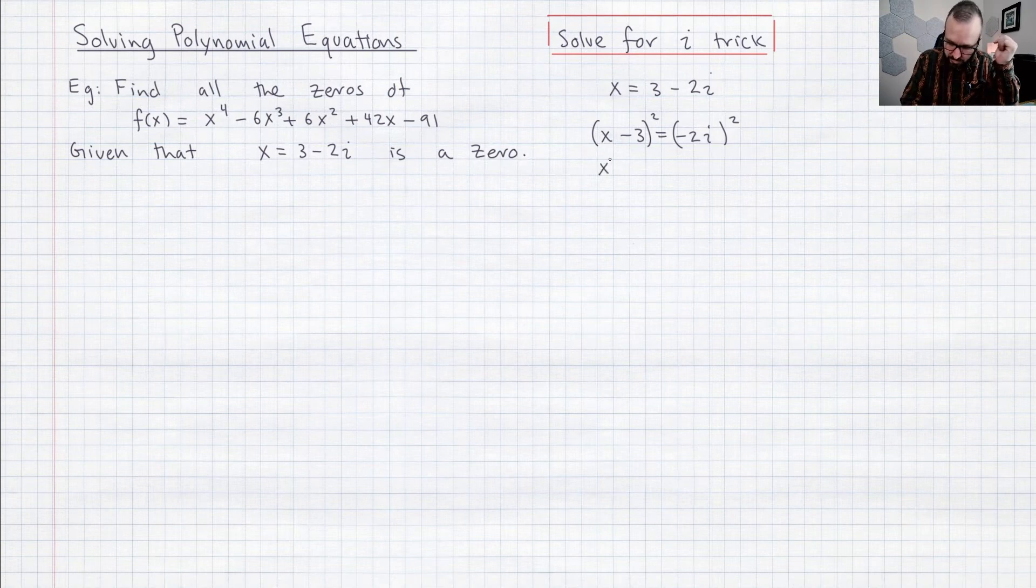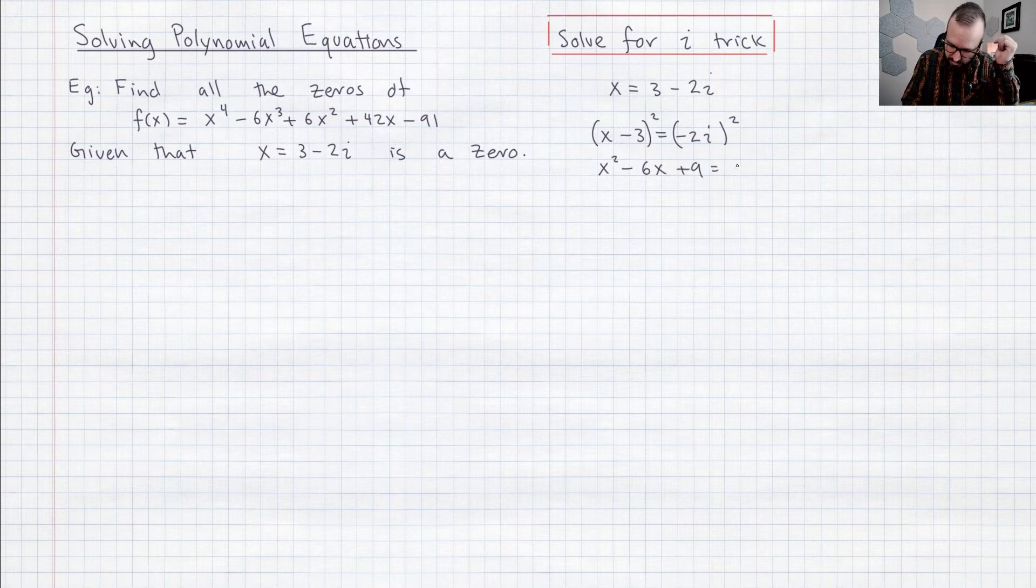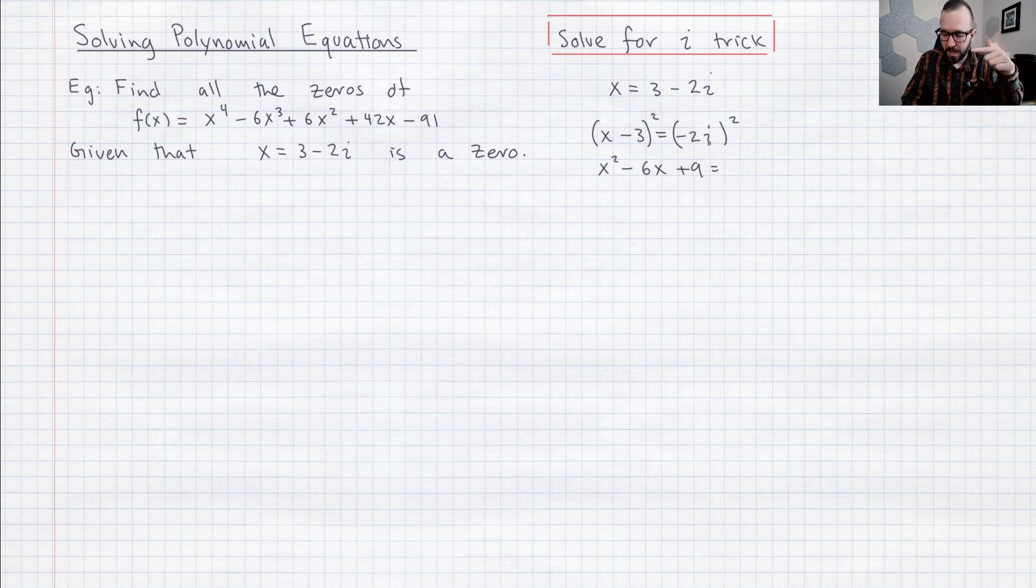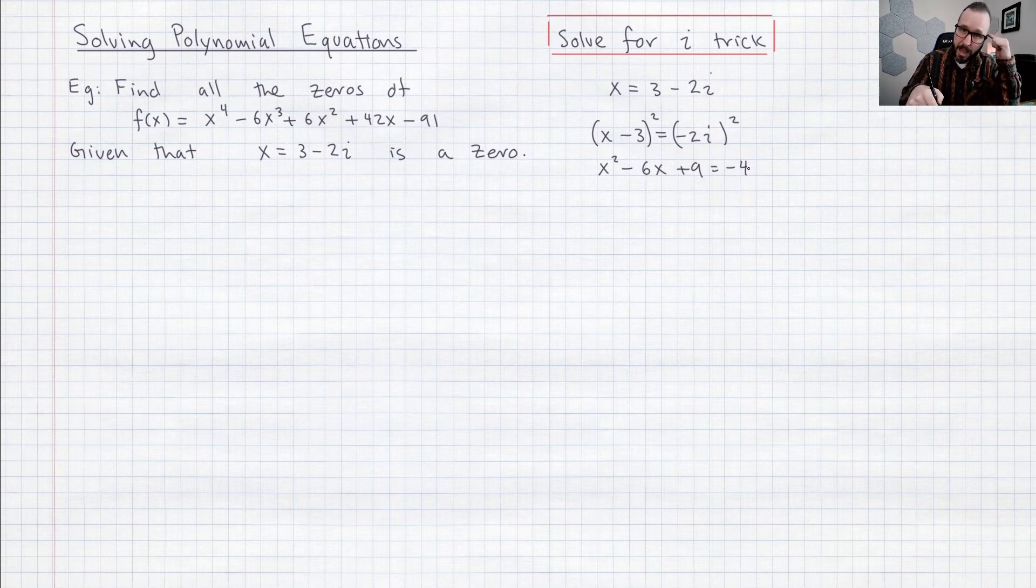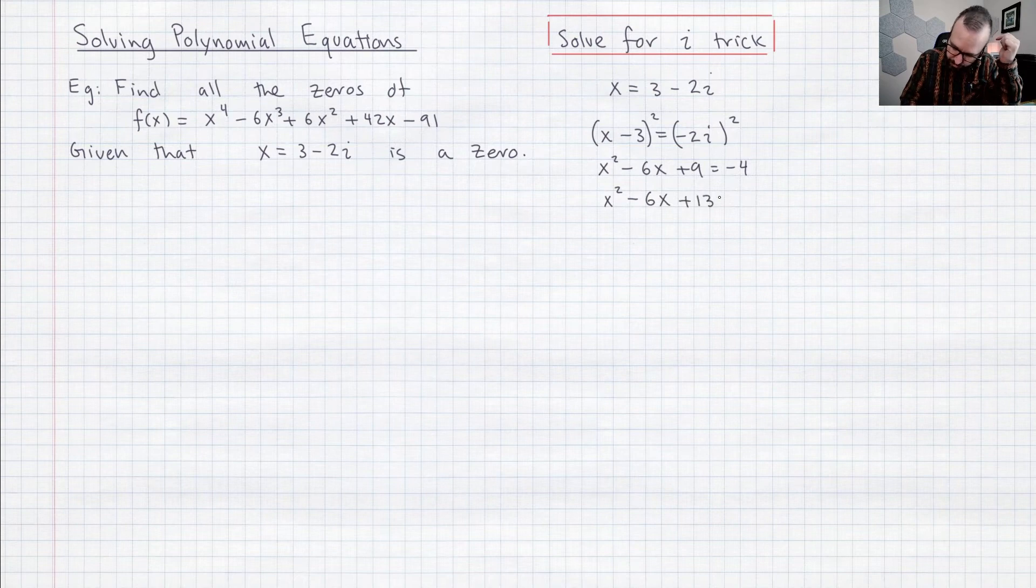So let me just square this I'm getting x squared minus six x plus nine and on the right hand side when I do negative two squared I'm going to get four and then when I do i squared I'm going to get negative one so that means this is negative four and now if I add four to both sides I'm going to get x squared minus six x plus 13 equals zero.